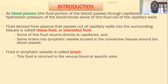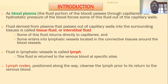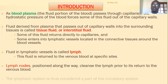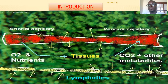The fluid found within the lymphatic vessels is called lymph. This fluid is returned to the venous blood at specific points. Lymph nodes positioned along the way cleanse the lymph before it is returned to the venous blood. The lymphatic system is therefore considered part of the circulatory system because it is also involved in the circulation of fluids within the body.